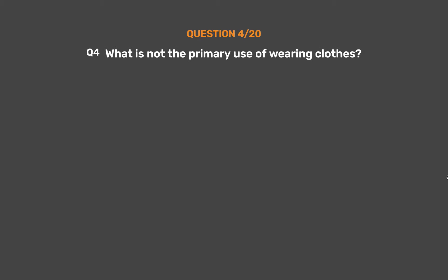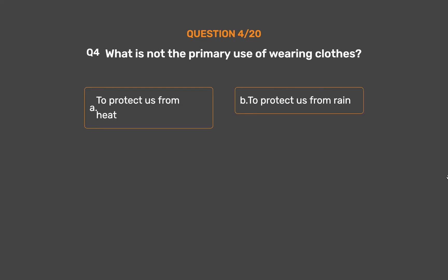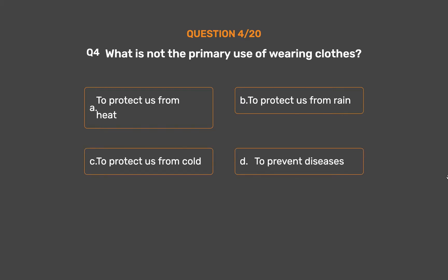Question number 4. What is not the primary use of wearing clothes? Option A, To protect us from heat; Option B, To protect us from rain; Option C, To protect us from cold; Option D, To prevent diseases.